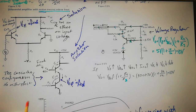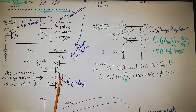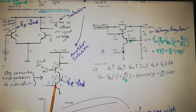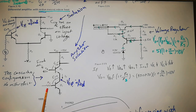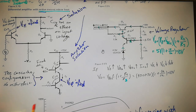In the cascode configuration, we separate the tasks the same way: one transistor deals with the signal and one deals with the load. Q2 is fixed at plus three volts and acts like a common-base amplifier, dealing with the load resistor. Q1 deals with the input signal. There's no Miller effect because the collector is fixed: three volts minus 0.6 gives 2.4 volts at the emitter of Q2, and that's fixed. The signal is amplified without the collector moving, so the gain is not multiplied by Ccb.